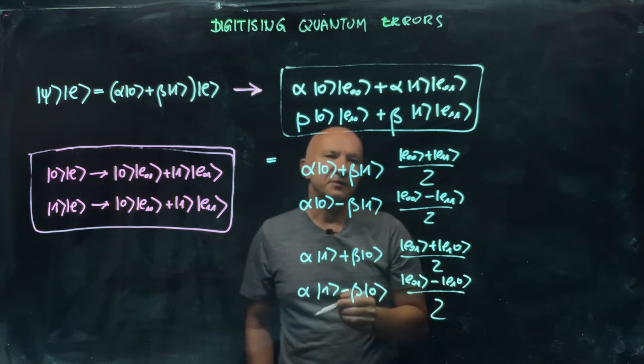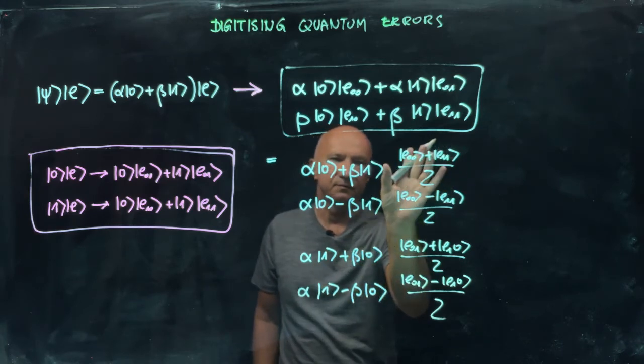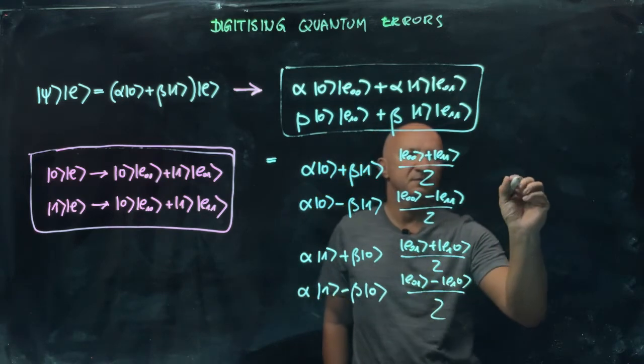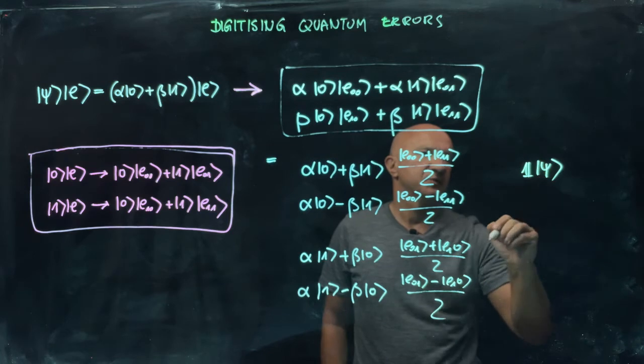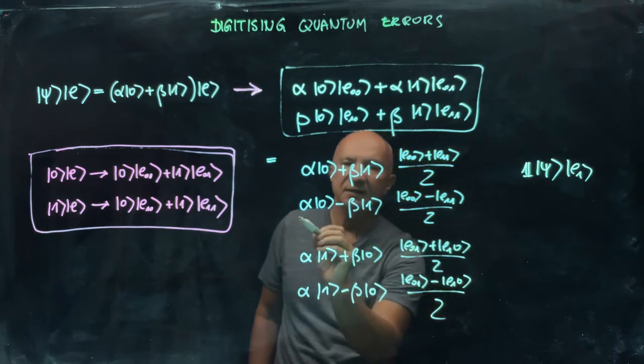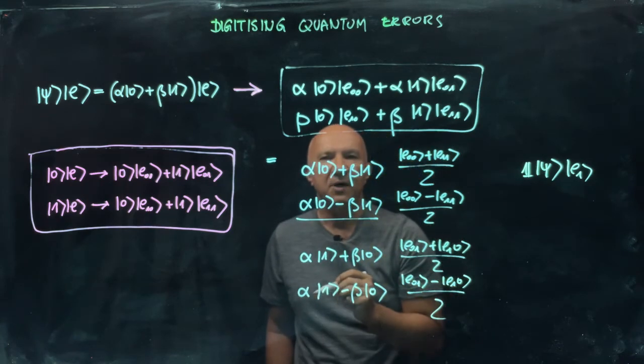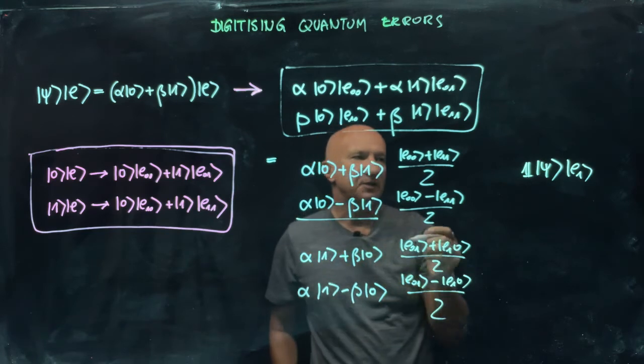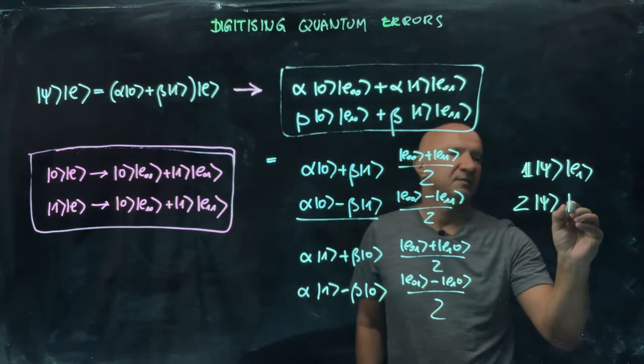The reason this is interesting is because if you look at the state of the qubit corresponding to the relative states of the environment, you can see that this one can simply be written as ψ, or identity|ψ⟩. Let's write this state of the environment as E_I. Then look at this state of the qubit—that's like applying the Pauli operator Z. It's a phase flip error applied to state ψ, so we can write this as Z|ψ⟩ and some corresponding state of the environment, call it E_Z.